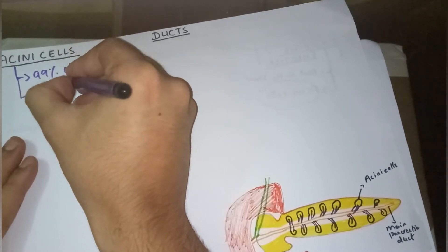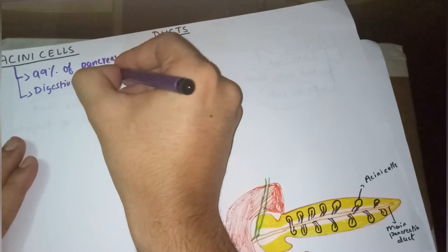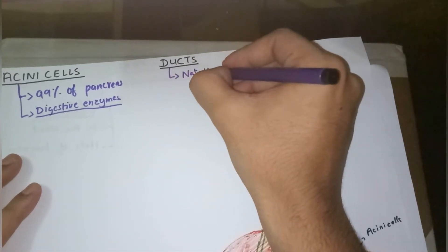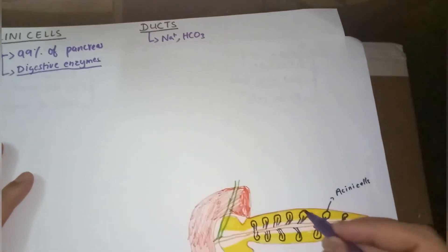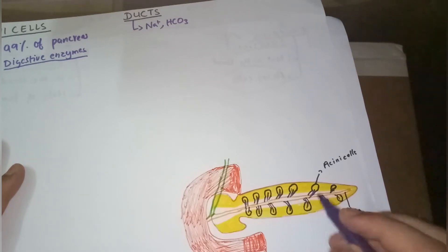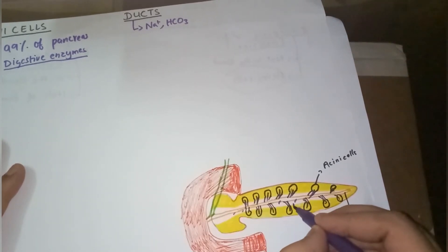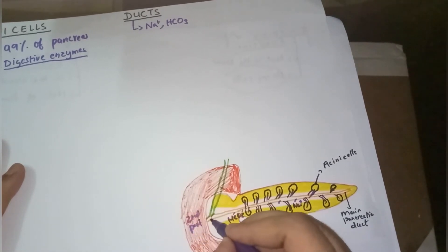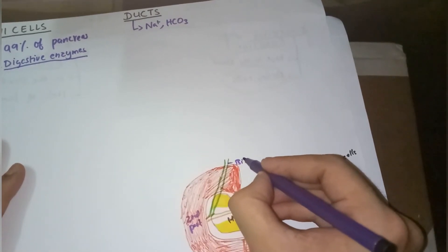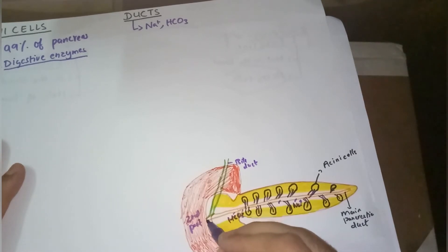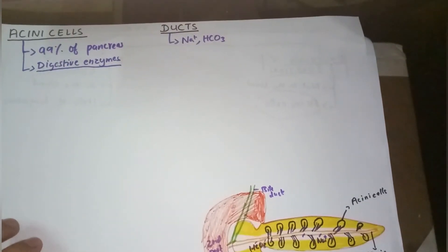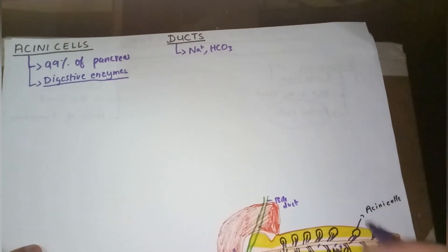The acinar cells secrete digestive enzymes. There is also the main pancreatic duct, which secretes sodium and bicarbonate. The digestive enzymes from the acinar cells go into the main pancreatic duct. The bile duct combines with the main pancreatic duct, and all of this drains into the second part of the duodenum, where it performs its function.